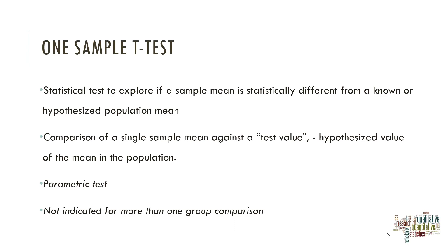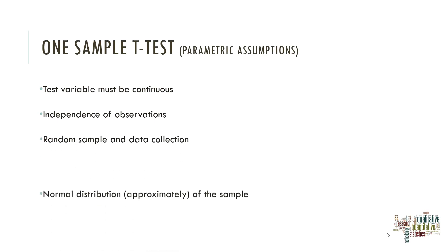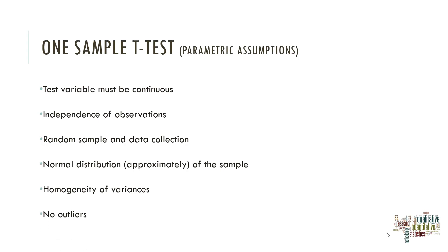Let's see the assumptions. The test variable must be continuous. It must be an independence of observations. The sample must be collected from a random paradigm. It is assumed a normal distribution. Also, the homogeneity of the variances is always necessary and we also have the assumption that can't be outliers in the distribution.